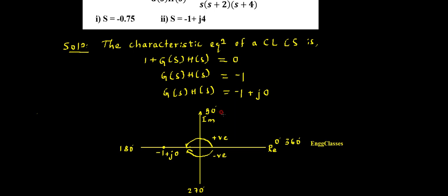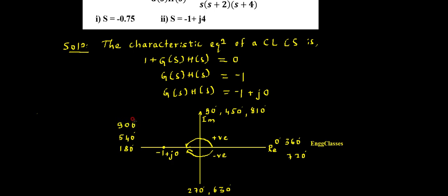If I continue further: 360 + 90 = 450 degrees, 450 + 90 = 540 degrees, 540 + 90 = 630 degrees, 630 + 90 = 720 degrees, 720 + 90 = 810 degrees, and 810 + 90 = 900 degrees. So this continues in that pattern.